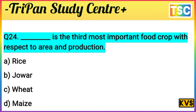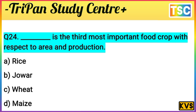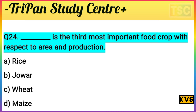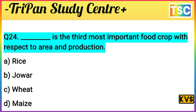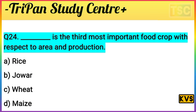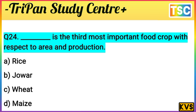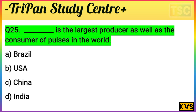The question asks: what is the third most important food crop with respect to area of production? Rice and wheat are the most important food crops. Maize is also important, but the correct answer is Jowar — Jowar is the third most important food crop with respect to area of production. Option B, Jowar, is correct.